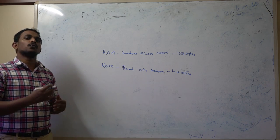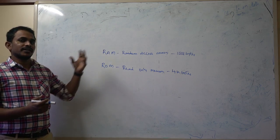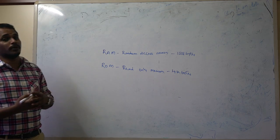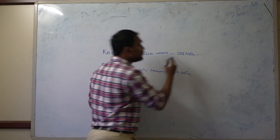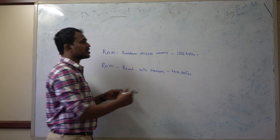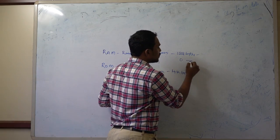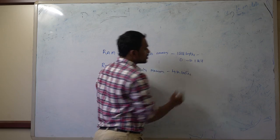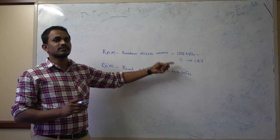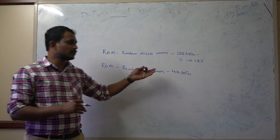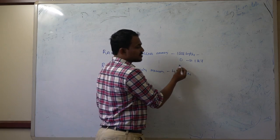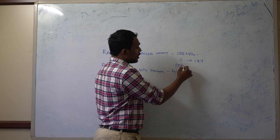Once the sizes are given, you need to find out the addresses of these memories. For 128 bytes of RAM, the decimal representation of addresses is 0 to 127. In hexadecimal format, 0 becomes 00H, and you need to convert 127 to hexadecimal.